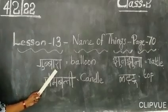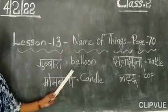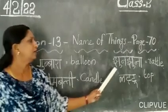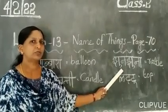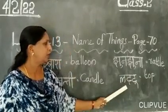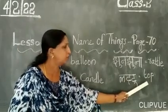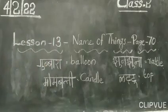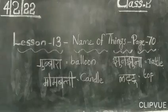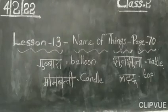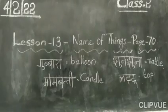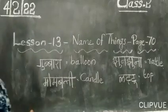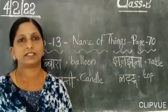Gubara means Balloon. Movedi means Candle. Chunchuna means Rattil. Liddu means Toe. Understand? Lesson 13 — Name of Things. You can learn three things: read and write. This lesson covers Name of Birds and Name of Things.